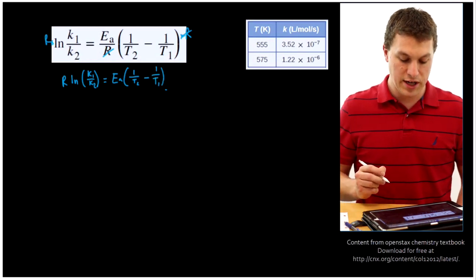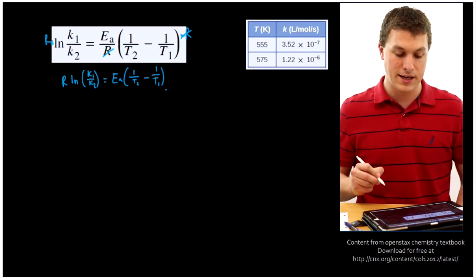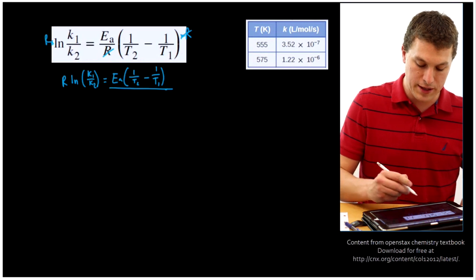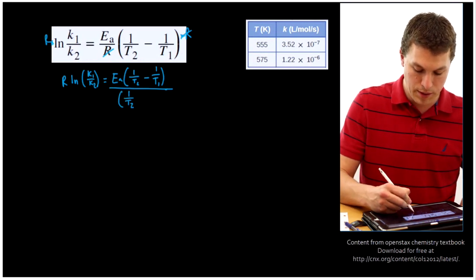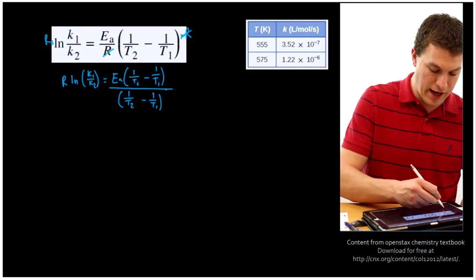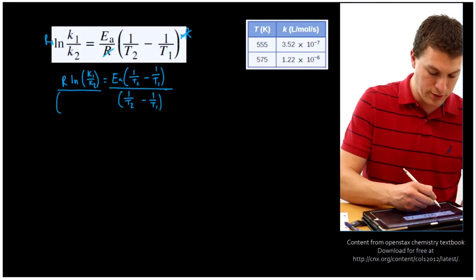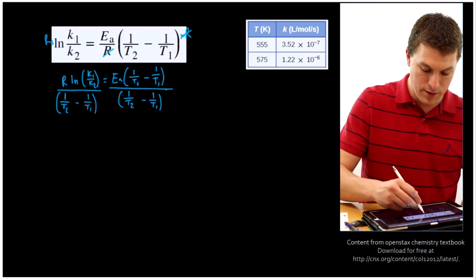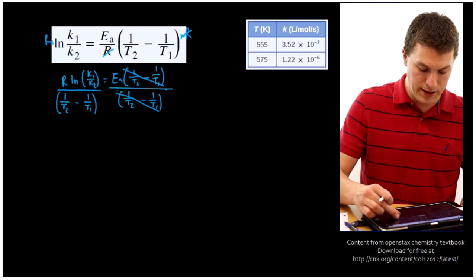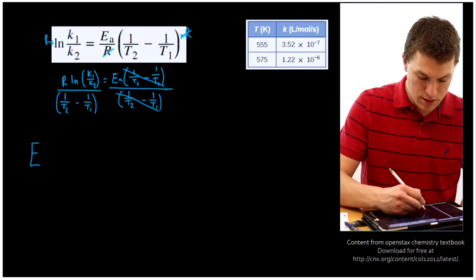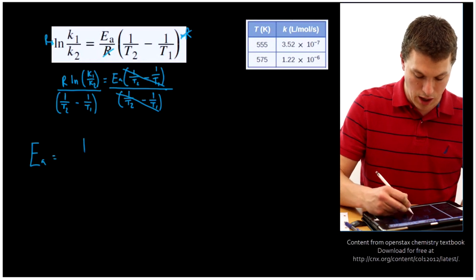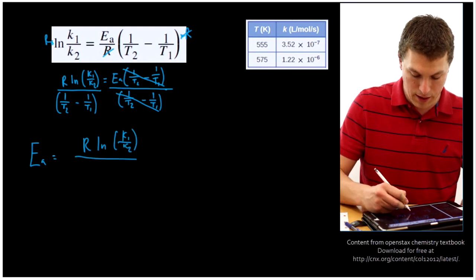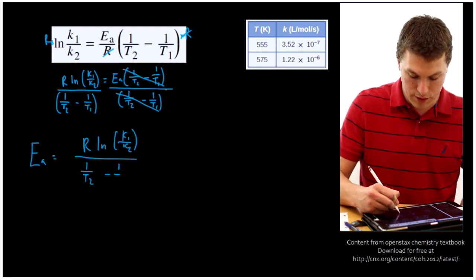Now what we're going to do is divide both sides by this whole big thing. A lot of people get stuck at this point in the algebra because they're like, how do I get rid of those t2s and t1s? Just treat that whole big thing like one variable. We're going to take 1 over t2 minus 1 over t1 and just divide both sides by it. That's totally legal and the easiest way to rearrange this. So that cancels out those guys. And what that means is we'll get that our activation energy is equal to R ln k1 over k2 divided by 1 over t2 minus 1 over t1.